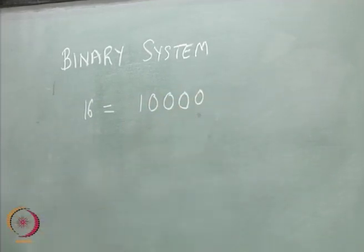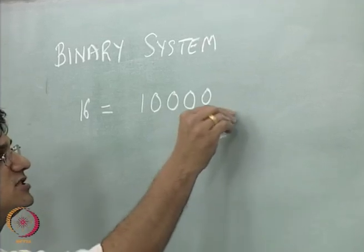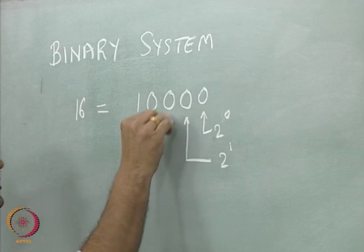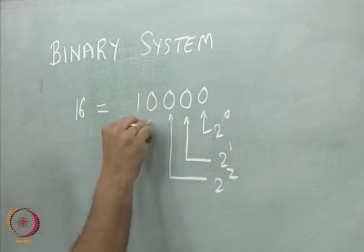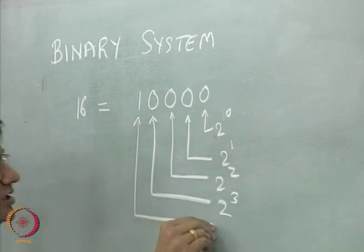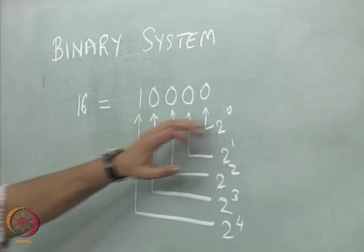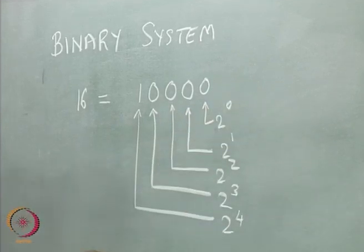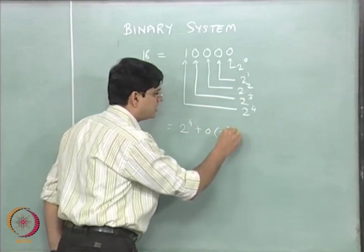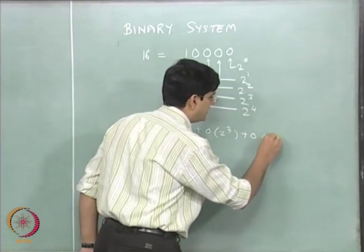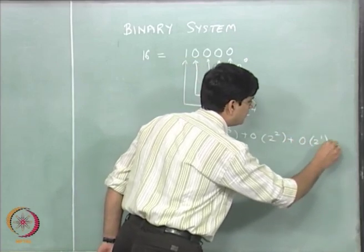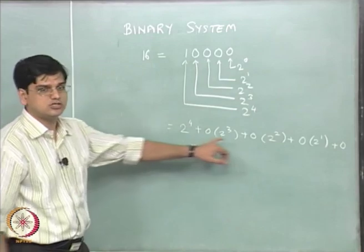This particular digit represents 2 to the power 0. This one represents 2 to the power 1. This represents 2 to the power 2. This is 2 to the power 3, and this is 2 to the power 4. So this number means 2 to the power 4 plus 0 multiplied by 2 to the power 3, plus 0 multiplied by 2 to the power 2, plus 0 multiplied by 2 to the power 1, plus 0, which is equal to 16.